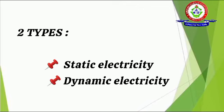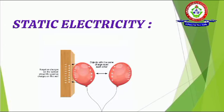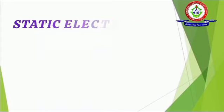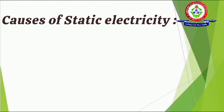The first type is static electricity, the second one is dynamic electricity. Static electricity is the buildup of electric charges at rest, typically on surfaces or objects. Now let's look at the causes of static electricity.